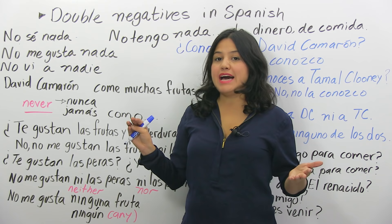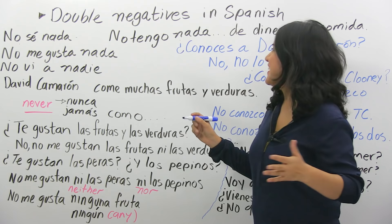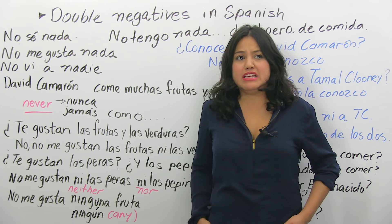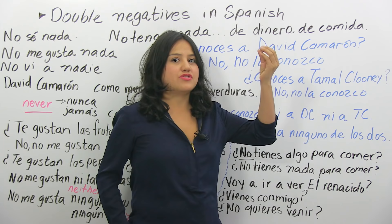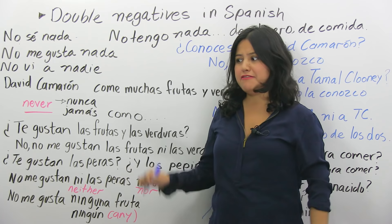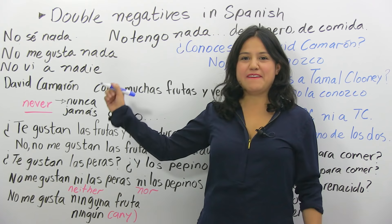No vi a nadie — I didn't see anybody. It's a way of negating it doubly. I do not have anything. No tengo nada. No tengo nada de dinero — no money. No tengo nada de comida — nothing to eat. Open my fridge, you want to cry. No tengo nada de comida. That's just an example — I have lots of avocados and beans and stuff.